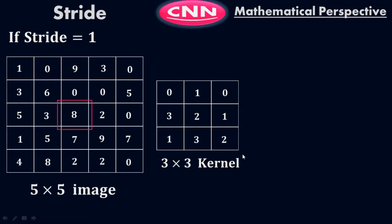Once you reach here, start from here, leave one row, then one column, and then again one column. Then start from here, leave the second row, then one column, and then again one column. So stride equals 1 means leave one column, one row, one column, one row, and one column, one row. If you pick this matrix out of this image and use the kernel, then leave one column, start from here, then leave the second column, start from here.